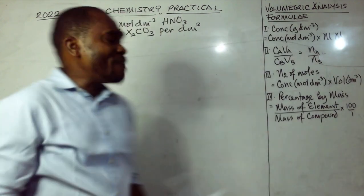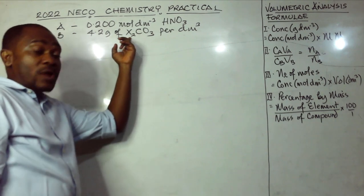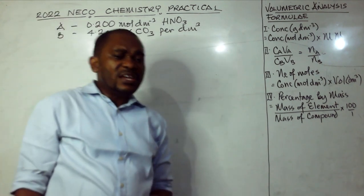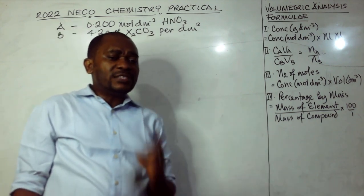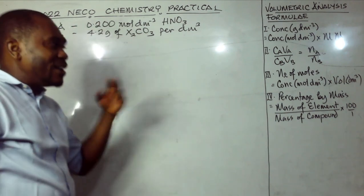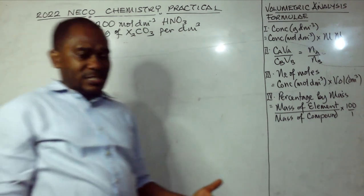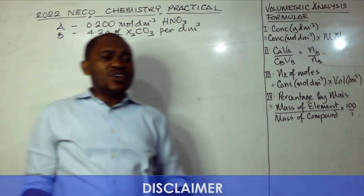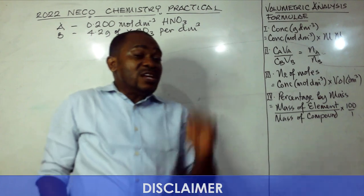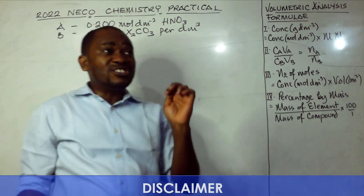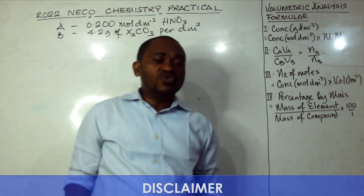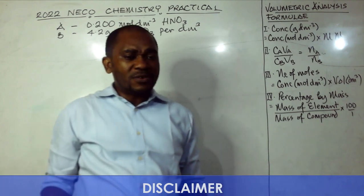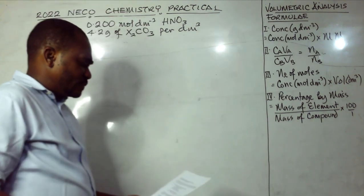Normally, if a question has an unknown in the formula of one of the reactants, you'll likely be asked to calculate the molar mass of the compound, the relative atomic mass of the unknown, and possibly the percentage by mass of the unknown element. Remember, these questions are simulated — don't cram. Just understand the steps, follow the principles, and understand the concepts.